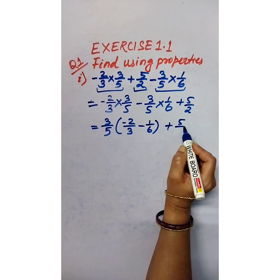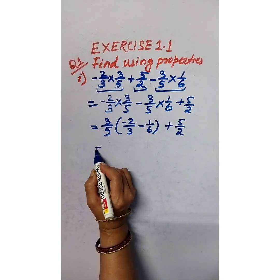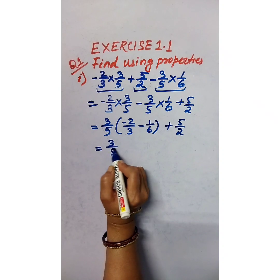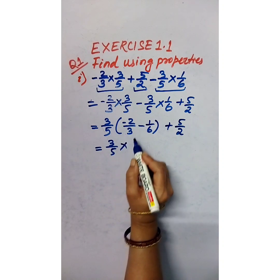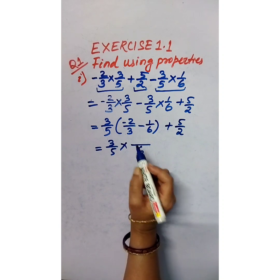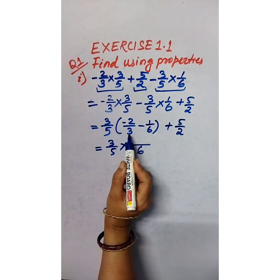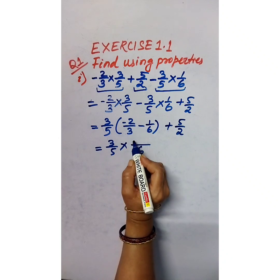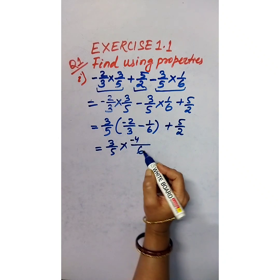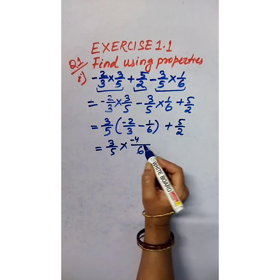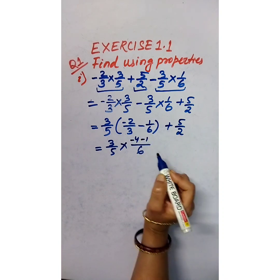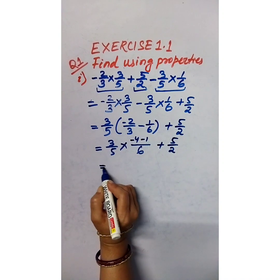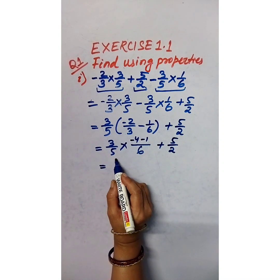Plus 5/2 is left outside. Now we can simplify the bracket. The LCM is 6. So 6 divided by 3 is 2, multiplied by 2 gives negative 4. And 6 divided by 6 is 1, so 1 into 1 is 1, giving negative 1. So the bracket becomes negative 4 minus 1 — wait, that simplifies to negative 5 over 6.